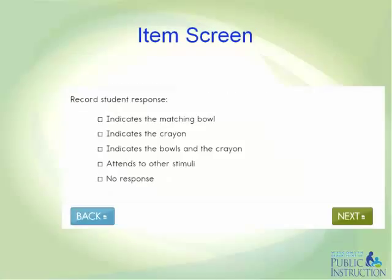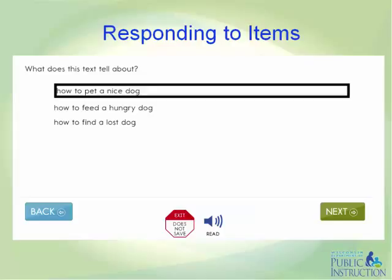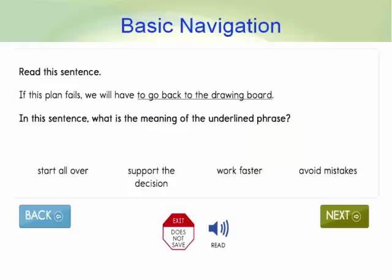Here's an example of an item screen for a lower linkage level testlet in math. The scripted statements appear on a previous screen, and the item contains five answer choices that could describe the student's response. The process of responding to items in the KITE system for teacher-administered testlets is the same as in computer-administered testlets. Depending on the testlet, the item may appear on the same screen with some prior scripted text or may appear by itself. The test administrator selects the answer choice corresponding with the student's response using a mouse, tab and enter keys, or by touching the answer choice on a touch screen such as an iPad. The answer can be changed while on the screen or by returning to it from another point within the testlet.